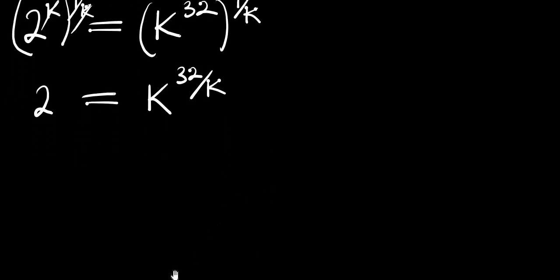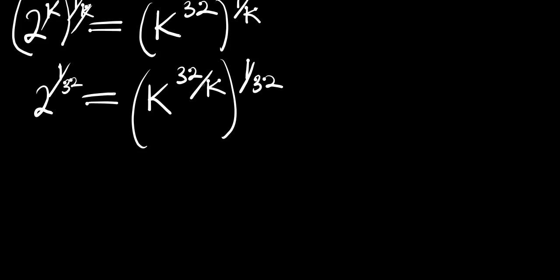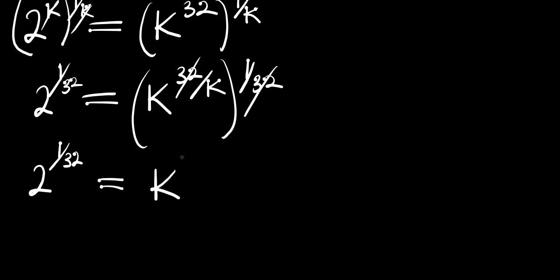The next thing we are going to do is try and eliminate this 32. We are also going to multiply the exponent by 1 divided by 32, and we do the same thing here. By doing that, 32 will cancel 32, so we are going to have 2 raised to the power of 1 divided by 32 equals k raised to the power of 1 divided by k.